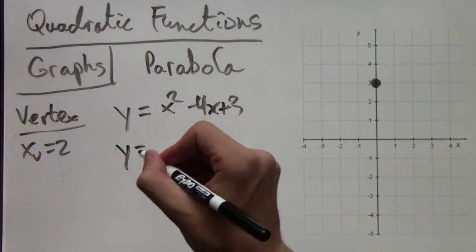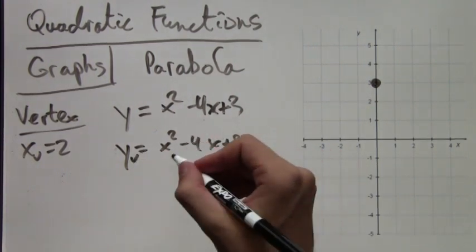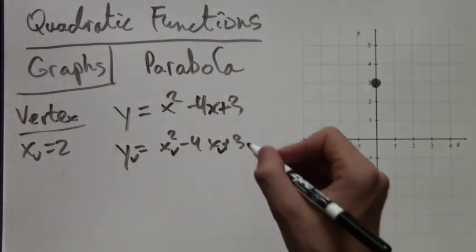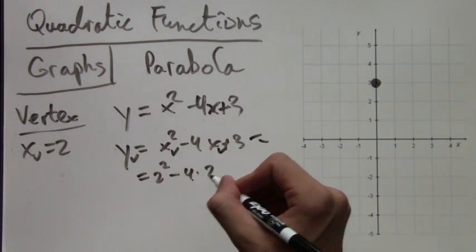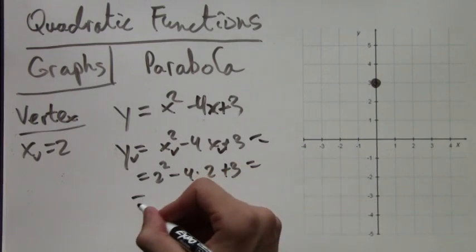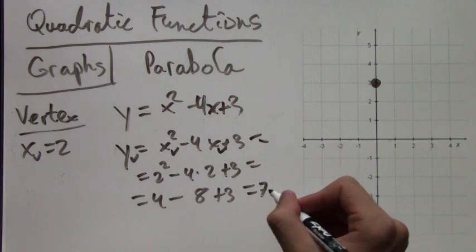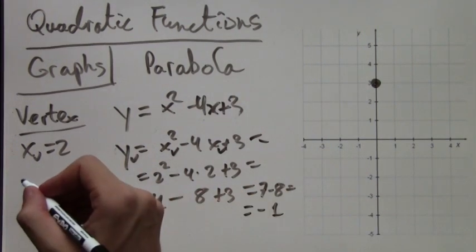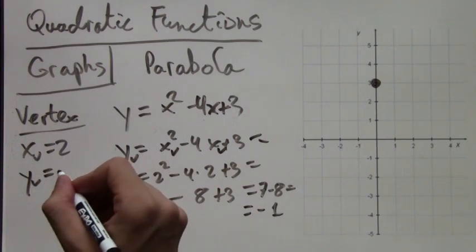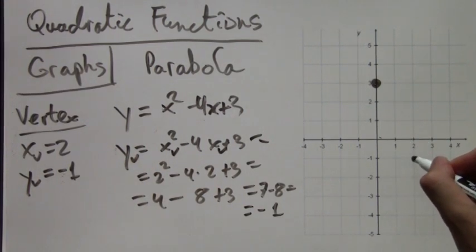We know that y equals x squared minus 4x plus 3, so the y-coordinate of the vertex is just plugging in xv, which is 2. You get 2 squared minus 4 times 2 plus 3, which is 4 minus 8 plus 3, the same as 7 minus 8, which equals negative 1. This tells us that the point (2, -1) lies on the parabola and is its vertex.